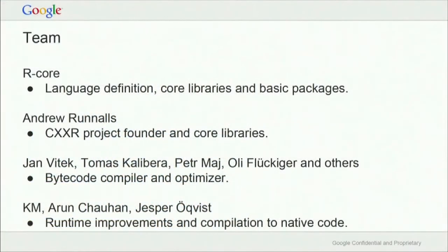We have a substantial team. Our code is descended from R Core's code and still maintains that link — anything R Core does, we get automatically; it's literally as simple as a git pull. Andrew Runnels did a lot of the early refactoring work. There's a team led by Jan Vitek from Northeastern University working on generating a more efficient bytecode compiler and optimizer. And we have a small team at Google working on the runtime — memory management, object representations, and converting bytecode to native code.